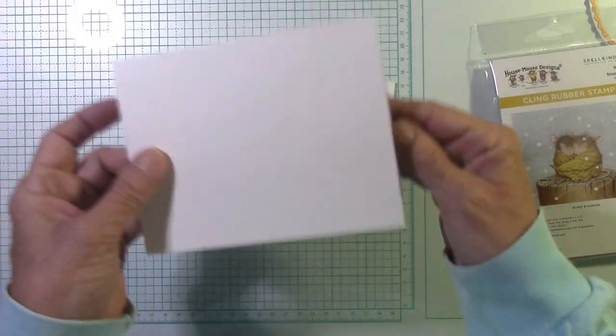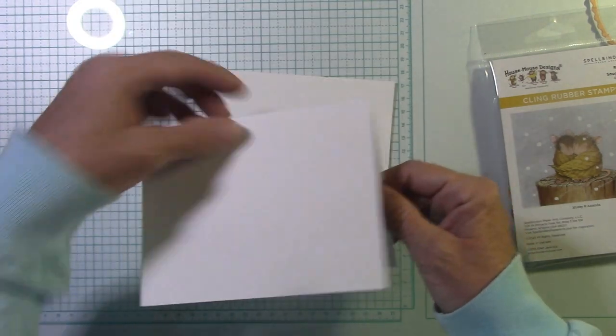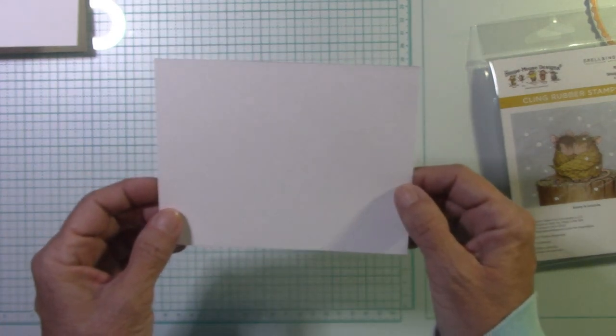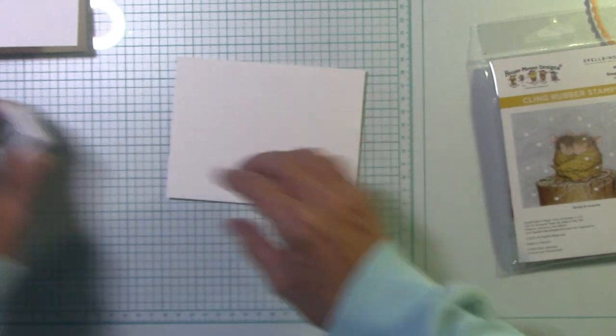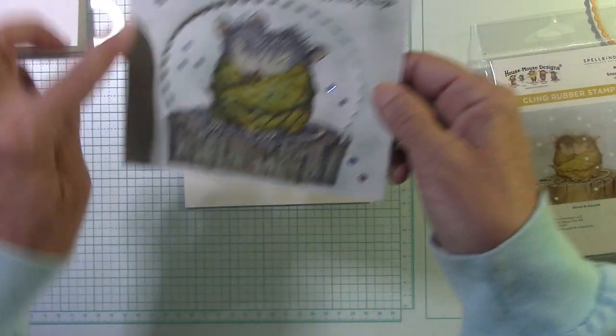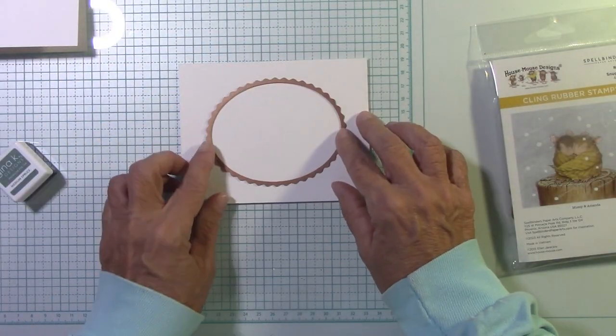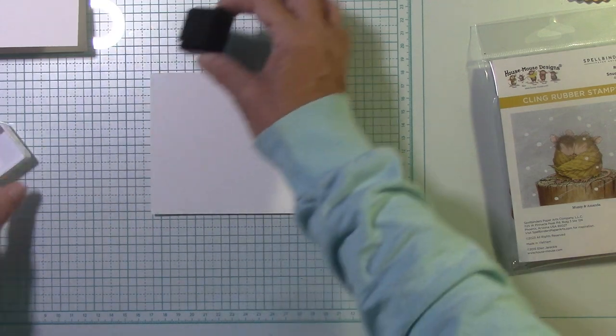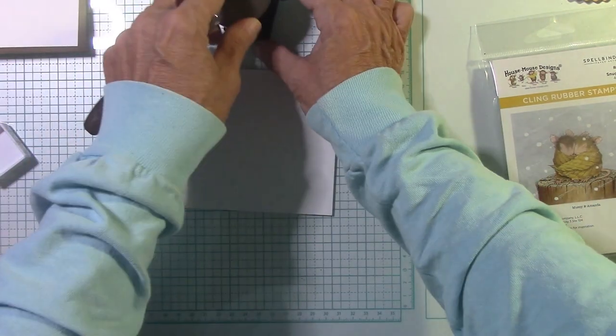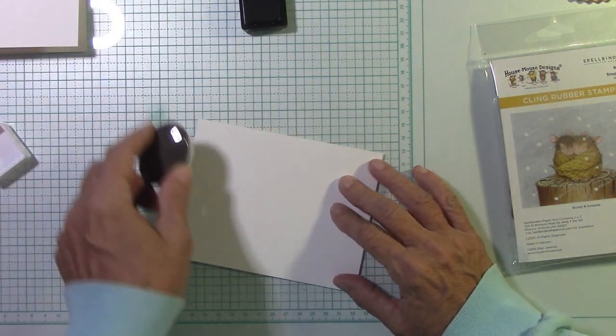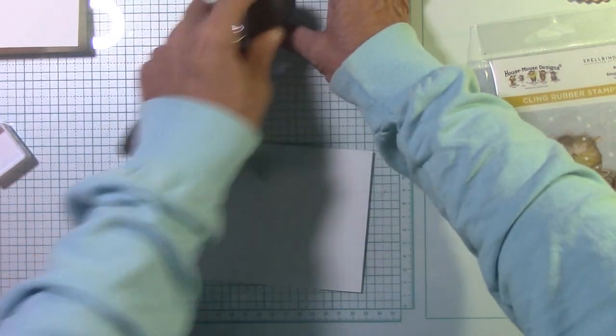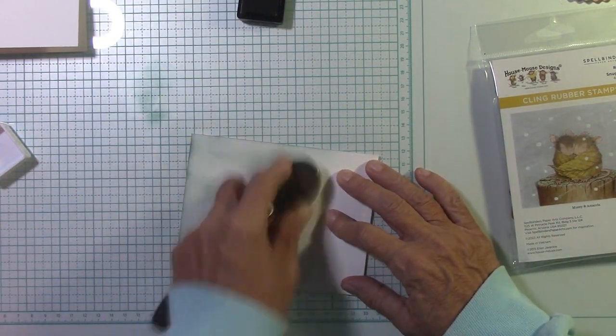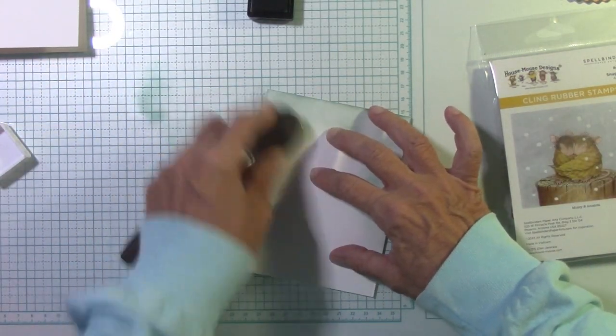Let's start. Our base is eight and a half by five and a half scored at four and a quarter. We're going to use landscape mode. My outside piece is just a piece of white Neenah cardstock at five and a half by four and a quarter. First we want to ink this piece up because this piece is going to become this, and we're going to die cut it right here with Franz frames. I love Franz frames, there's so many different shapes. I'm going to use some medium spruce and I'm going to do this entire piece.